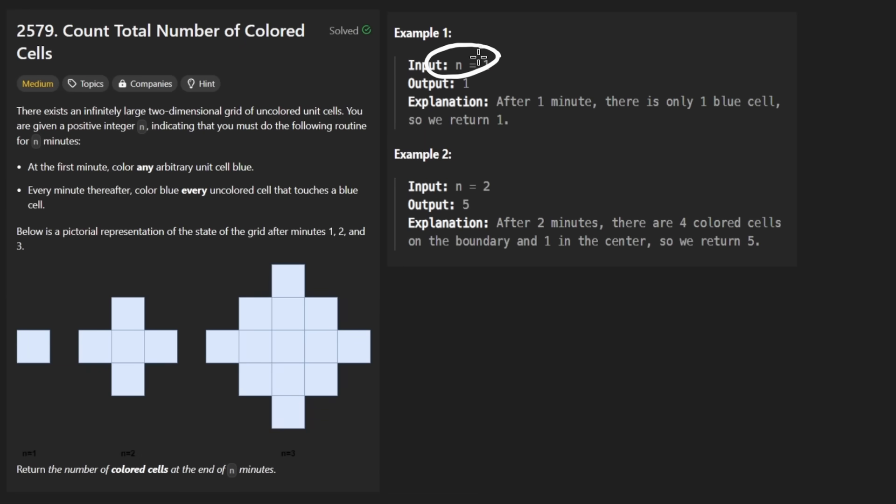So n equals one is kind of the base case. We have one little square. I'll use this picture here on the left. And then for n equals two, what we do is for the original square, everywhere on the perimeter of it, we add another square.